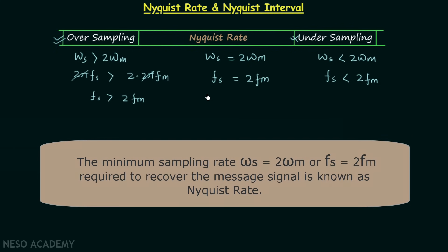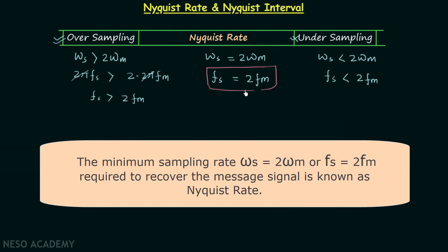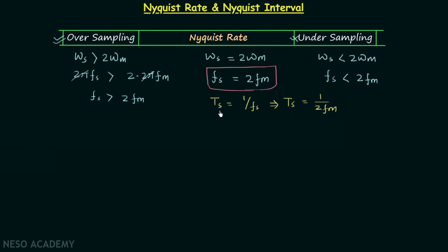This Fs is known as the Nyquist rate. So remember: Fs = 2·Fm. To calculate the Nyquist interval we simply use the relation between frequency and time period. We know time period equals 1 over frequency, so Ts = 1/(2·Fm). This is known as the Nyquist interval.